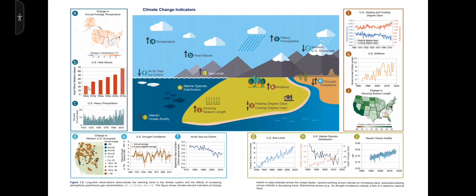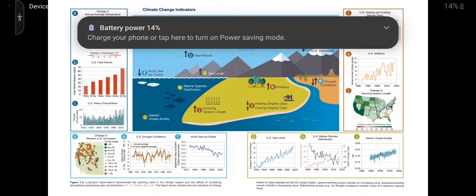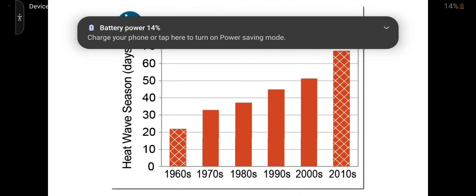So we have one graph which starts in 1960, another which starts in 1979, another which starts in 1920, and one more which starts in 1983. When you want to mislead people with statistics, picking your start date is very important.